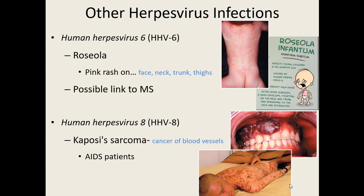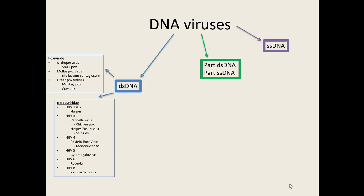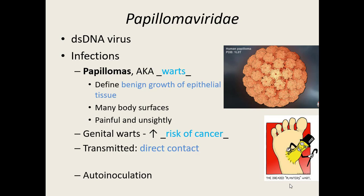On to our third double-stranded DNA family: the papillomaviridae family. It causes infections known as papillomas, more commonly known as warts. A wart or papilloma is a benign growth of epithelial tissue — your cells are reproducing uncontrolled and stay right there. Those growths can happen on just about any body surface you can imagine. They can be painful, unsightly, and there are some strains of papillomaviruses that can cause genital warts, which increase your risk of certain types of cancers.